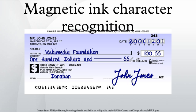The error rate for magnetic scanning is smaller than with optical character recognition systems. For well-printed MICR documents, the can't-read rate is usually less than 1%, while the substitution rate is in the order of 1 per 100,000 characters. MICR characters were added to the Unicode standard in June 1993 with the release of version 1.1. The Unicode block that includes MICR characters is called Optical Character Recognition and covers U+2440 through U+245F.